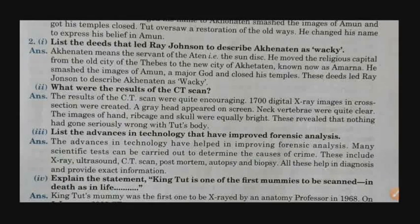Next: list the deeds that led Ray Johnson to describe Akhenaten as 'wacky.' Wacky means something not very good in shape, size, and behaviour. Akhenaten means a servant of Aten, the sun disk. He moved the religious capital from the old city of Thebes to the new city of Akhetaten, known as Amarna. He smashed the images of Amon, a major god, and closed his temples. These deeds led Ray Johnson to describe Akhenaten as wacky — slightly mad, not very good-looking, something like that.